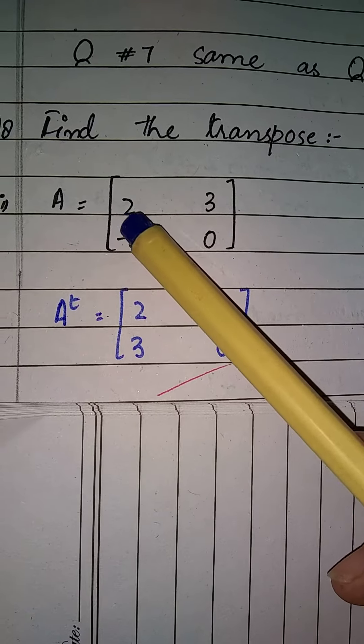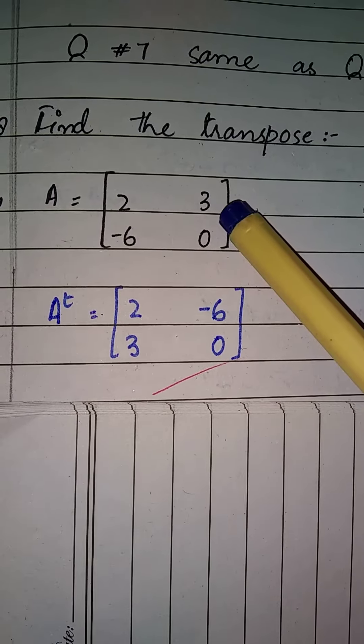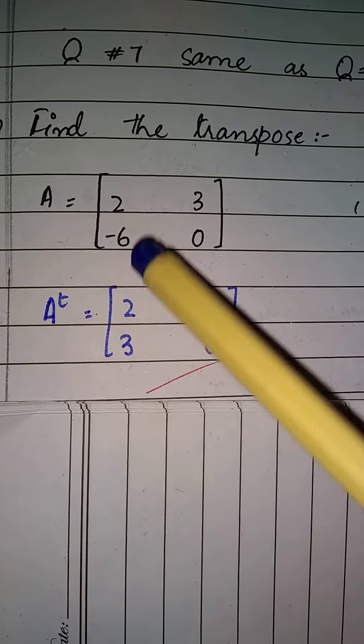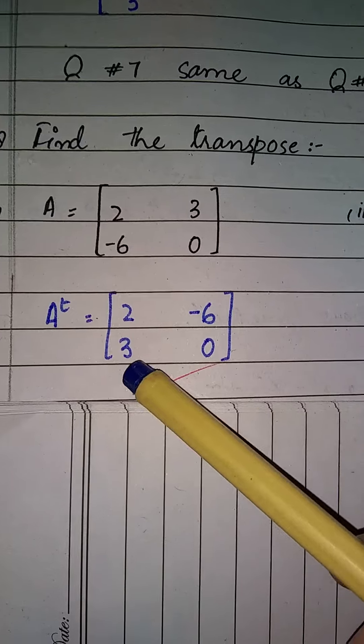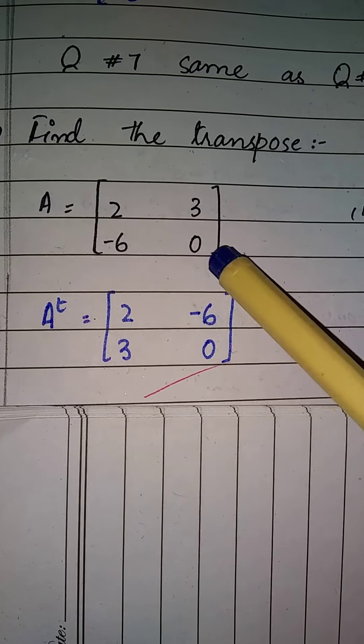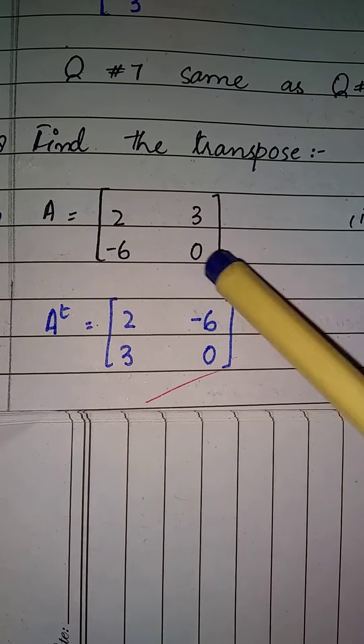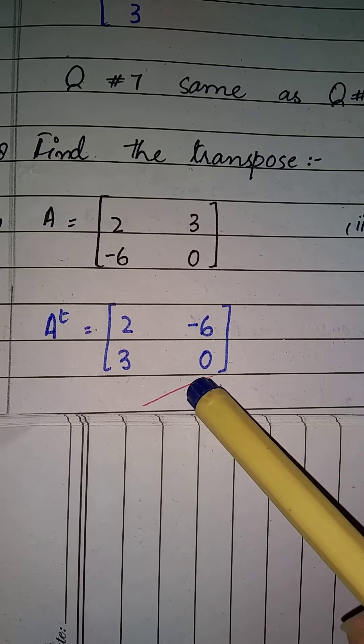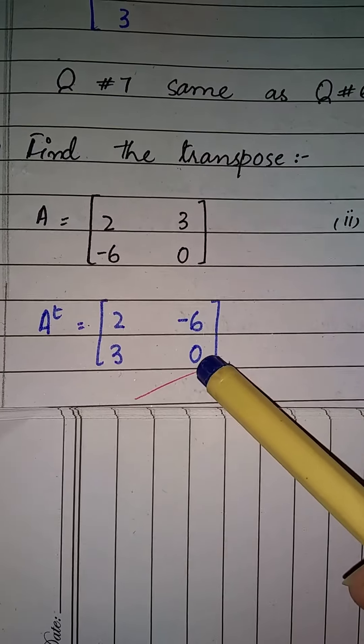Now, we have to see row number 1. What is it? 2, 3. So this row, we change into a column. I write it in the column: 2, 3. Next row, then we change the row into the column. Minus 6 and 0. Horizontal becomes vertical. We write 2 in column with minus 6 and 0. Rows into columns, then what we call it: transpose.